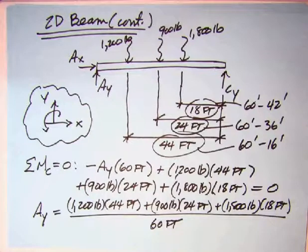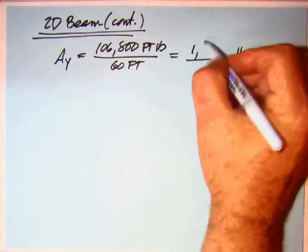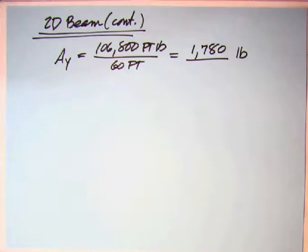Solving for A sub Y, we get the three terms in the numerator. We've got the same forces, but we've got different distances: 44, 24, and 18. When you multiply the numerator out, you get 106,800 foot-pounds divided by 60, which gives you the answer we got from the sum of the forces in the Y: 1,780. The reason I leave all these breadcrumbs is that if you get an answer and it's not one of the four choices, then you've got a lot of breadcrumbs to go back and try to figure out where you have a mistake. You don't have it all built into your calculator function.